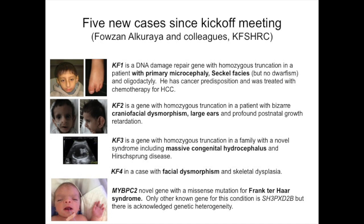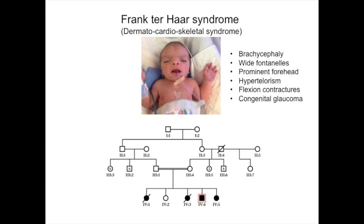There's another case with facial dysmorphism and skeletal dysplasia. The last one I'll mention involves myosin binding protein C2 — a novel gene in a case of Franck-Terhar (FTH) syndrome, with key features including brachycephaly, wide fontanels, prominent forehead, hypertelorism, flexion contractures, and in some cases congenital glaucoma. This is a consanguineous case with first-cousin mating, and the proband was mapped by autozygosity mapping and found to have a mutation in MYBPC2.